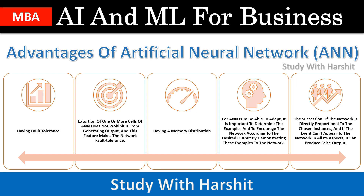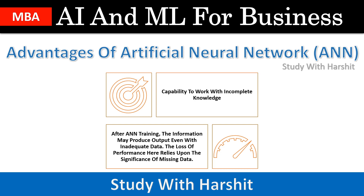If the event cannot appear to the network in all its aspects, it can produce false output. The next advantage is capability to work with incomplete knowledge. After ANN training, the information may produce output even with inadequate data. The loss of performance here relies upon the significance of the missing data.